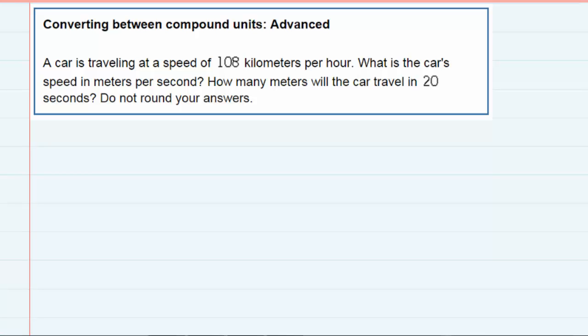Converting between compound units. We're told a car is traveling at a speed of 108 kilometers per hour, and we're asked what is the car's speed in meters per second.